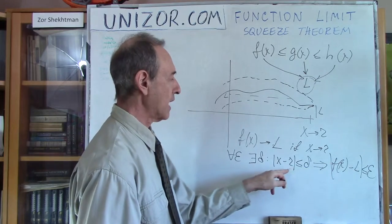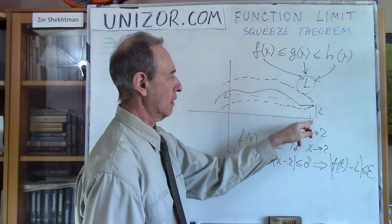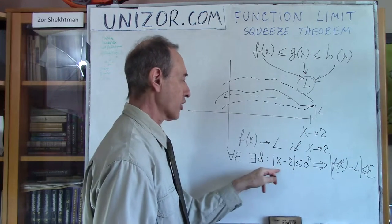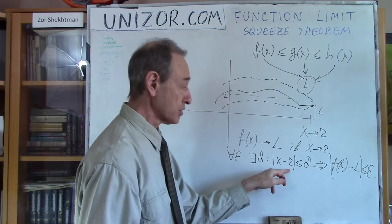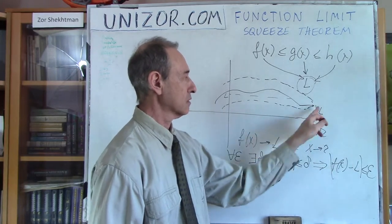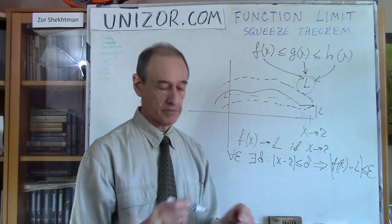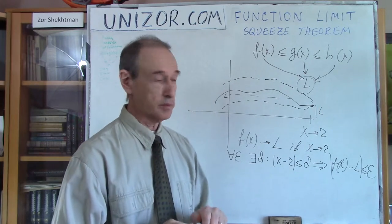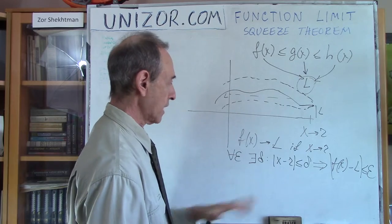That's what basically definition of the limit is. So I know that. I also know exactly the same thing about h. So let's call this epsilon 1. That's for f.